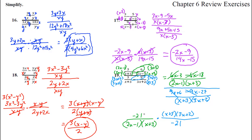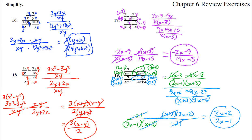Now we're multiplying — anything on the top with anything on the bottom that will cancel. The x plus 3s cancel. We are left with 3x plus 2 over 2x minus 1. That simplified down to something not as bad as I thought it was going to be.